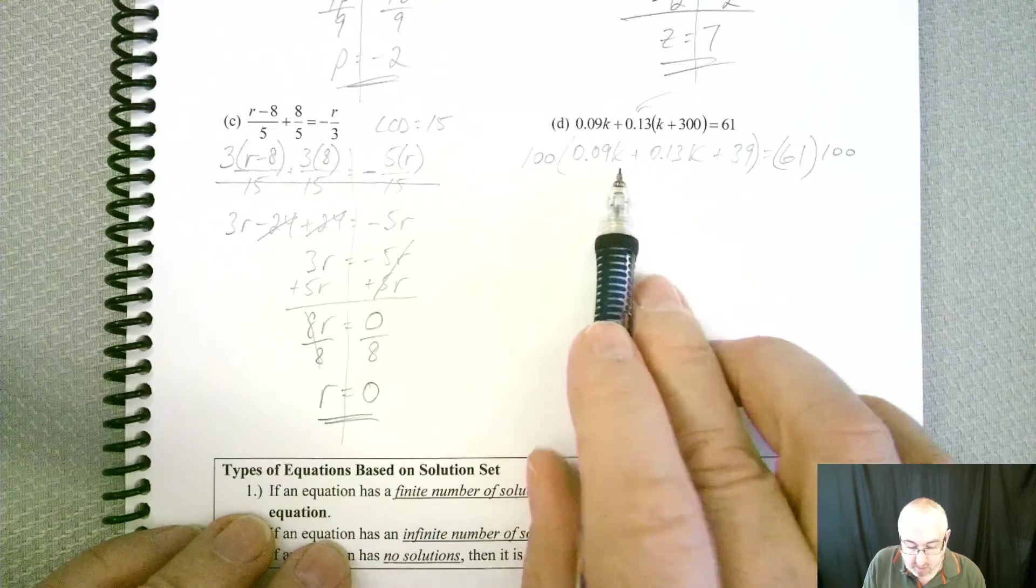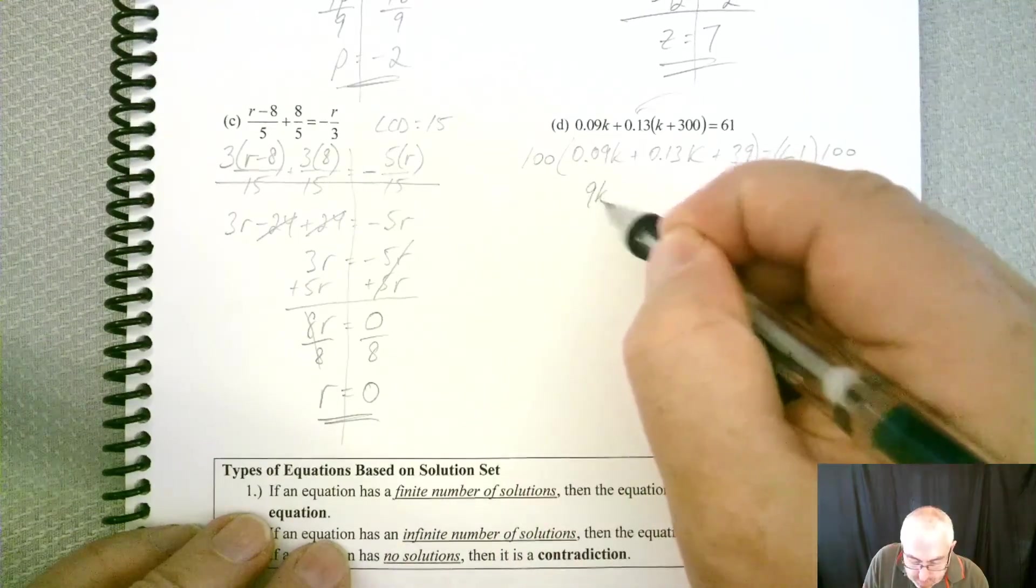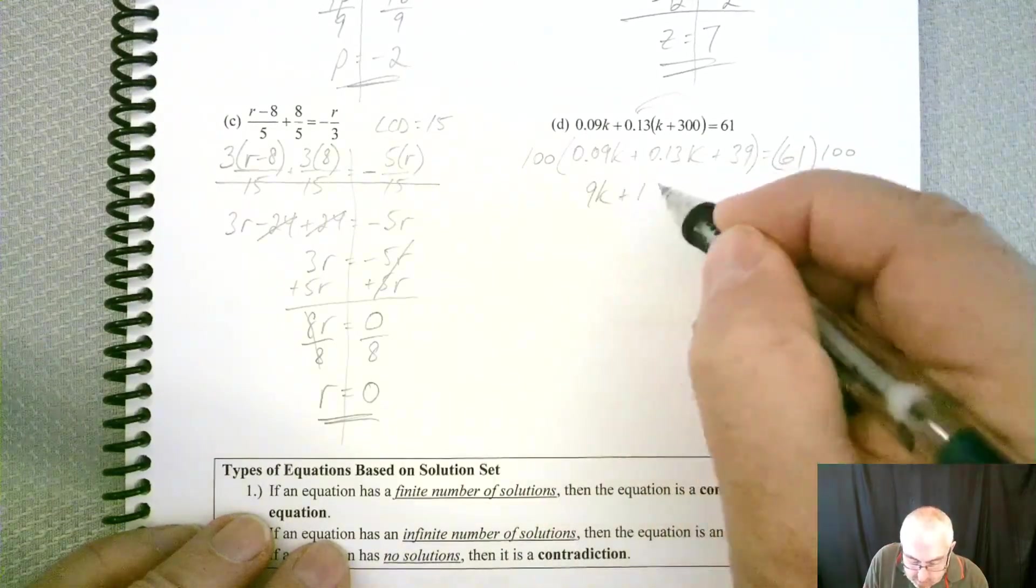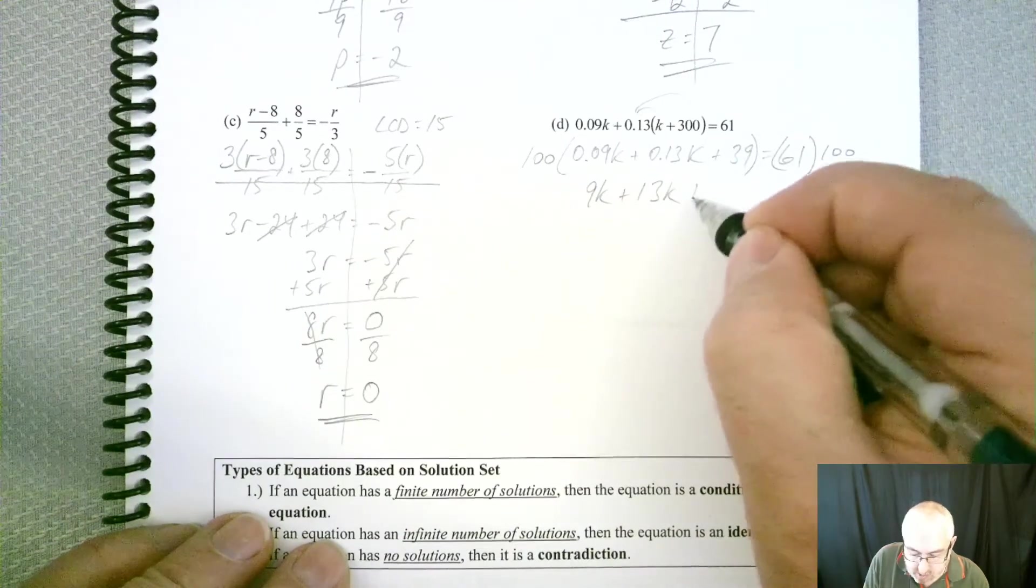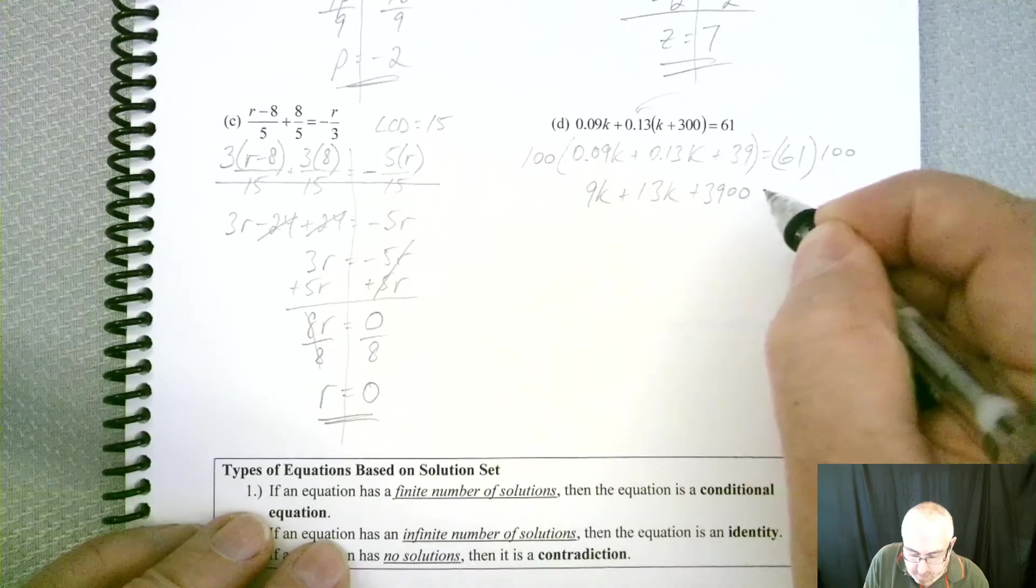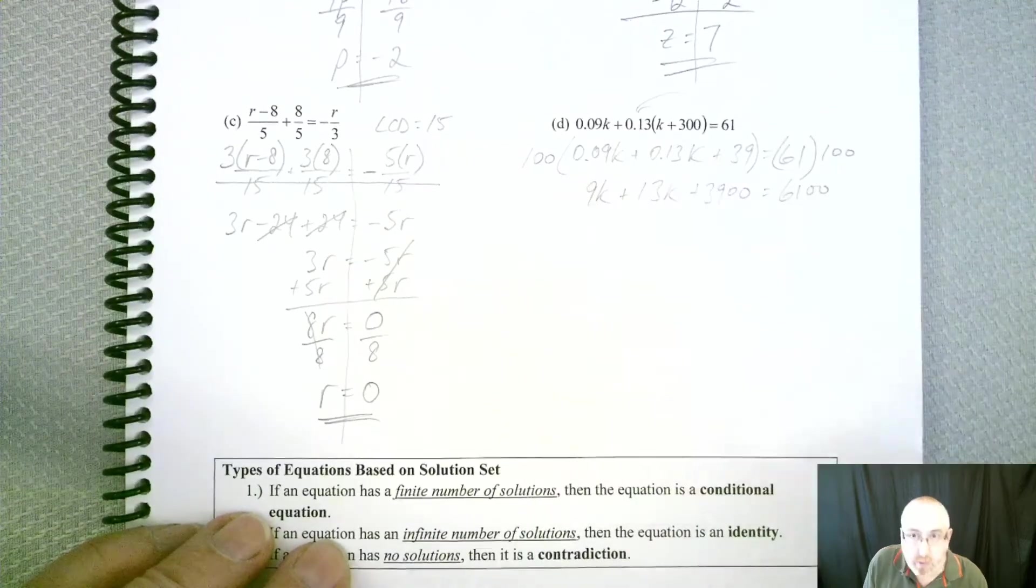If we multiply both sides by 100, that moves the decimal point over two spots on everything, though. So it's going to move it two spots on the first, two spots on the second, and two spots on the third. So 39 is going to change to 3,900, and then we got 6,100 over here.